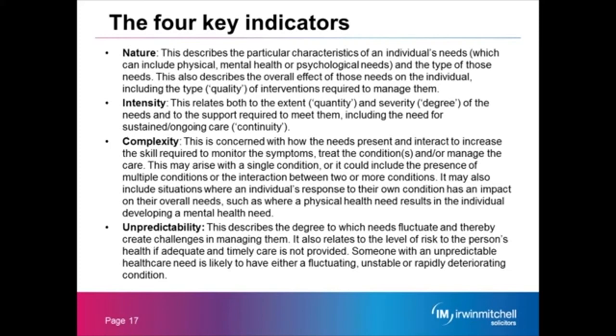Complexity may arise with a single condition or could include multiple conditions or the interaction between two or more conditions — for example, an elderly person who has dementia but also has physical health problems. It may also include situations where an individual's response to their own condition impacts their overall need, such as where a physical health need results in a mental health need. The last indicator is unpredictability — this describes the degree to which needs fluctuate and create challenges in management. It also relates to the level of risk to the person's health if adequate and timely care is not provided; someone with unpredictable healthcare needs is likely to have a fluctuating, unstable, or rapidly deteriorating condition.